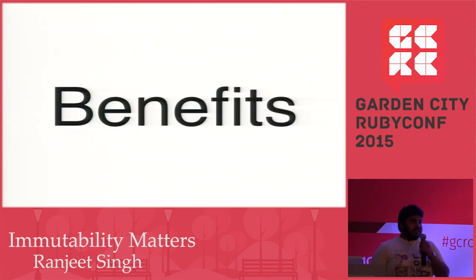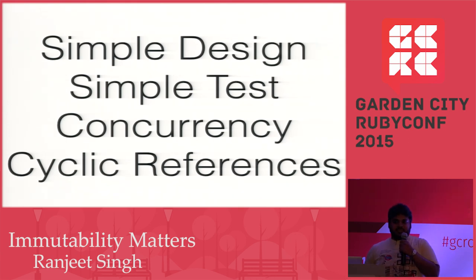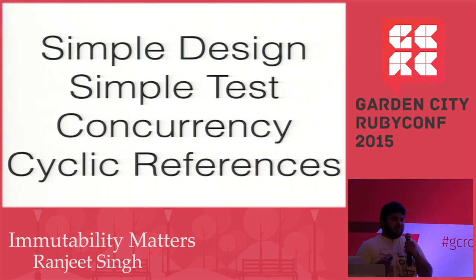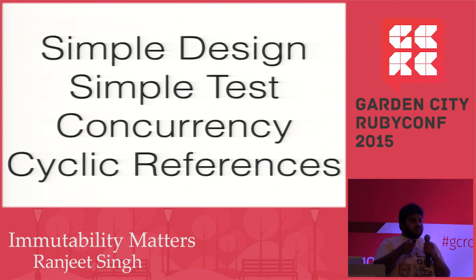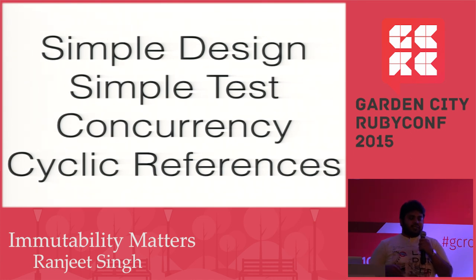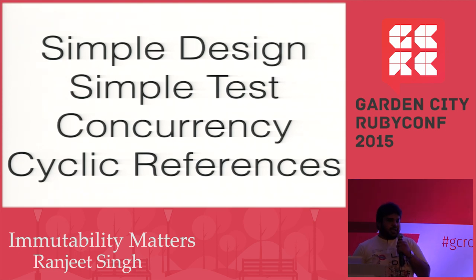Other benefits include simple design — a dog is constructed of legs, mouth, and sound, nothing else. Simple testing: you only need to check for equality between two objects by overriding the equals operator. Concurrency is the biggest issue — when two threads share a mutable object, a race condition arises where both threads modify the same object and it's unclear which modification to accept. Concurrency is also handled in online transaction processing or software transactional memory using multiple versions of objects.